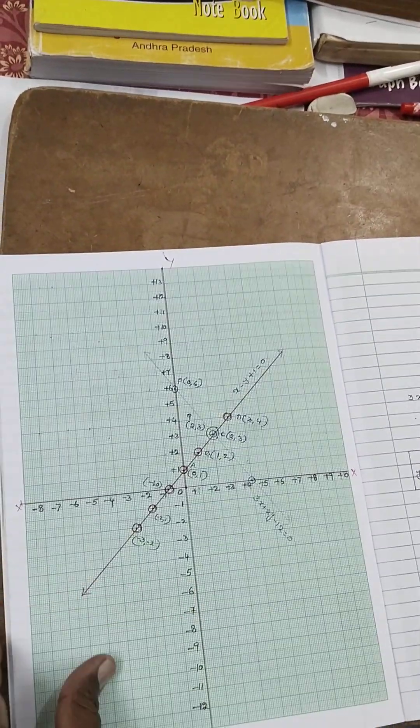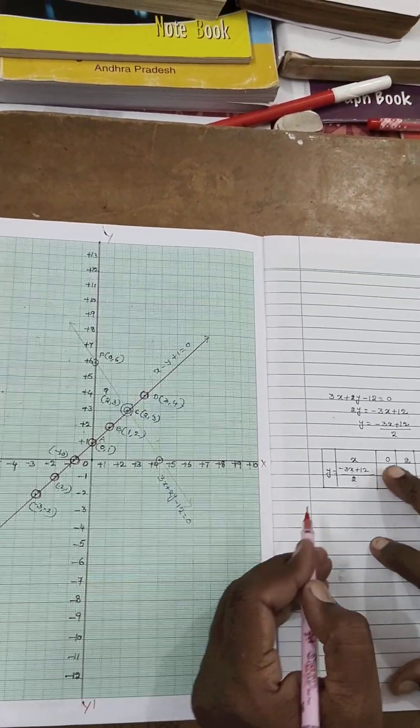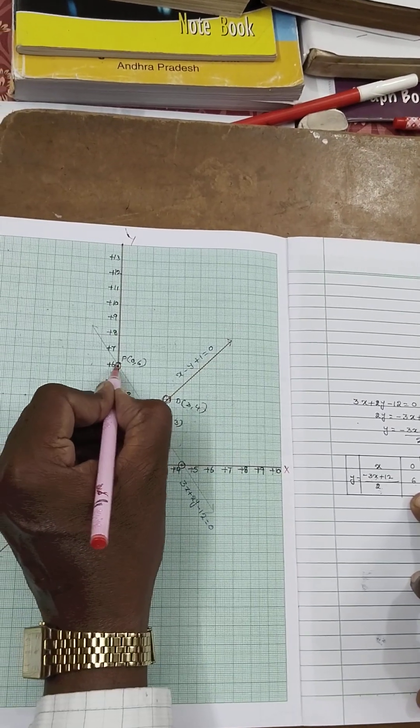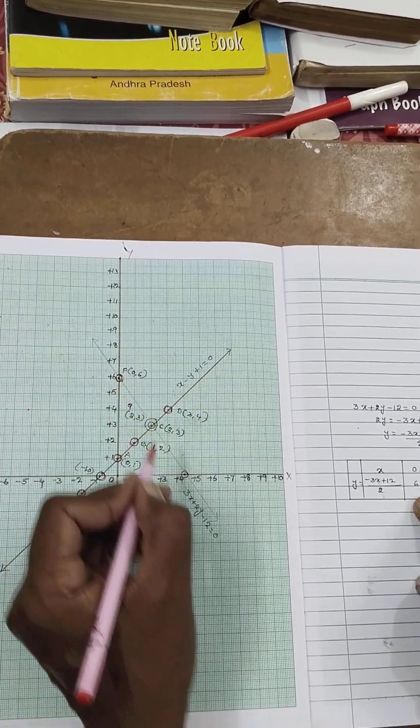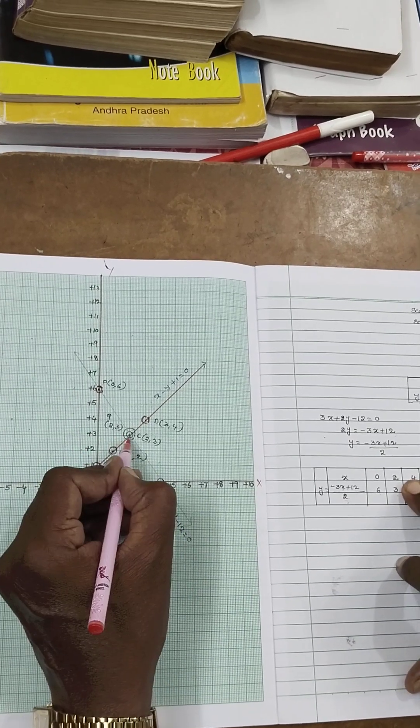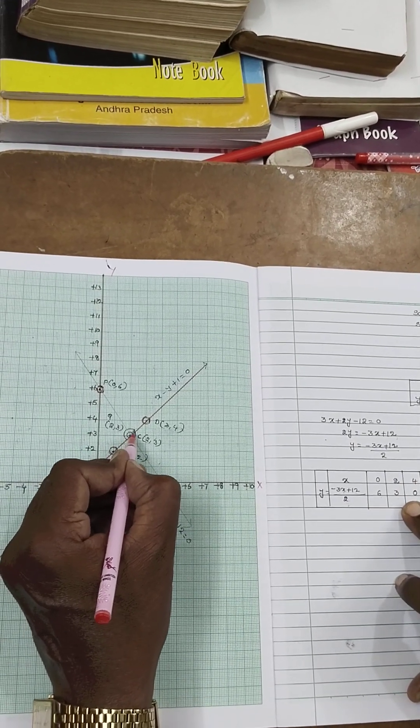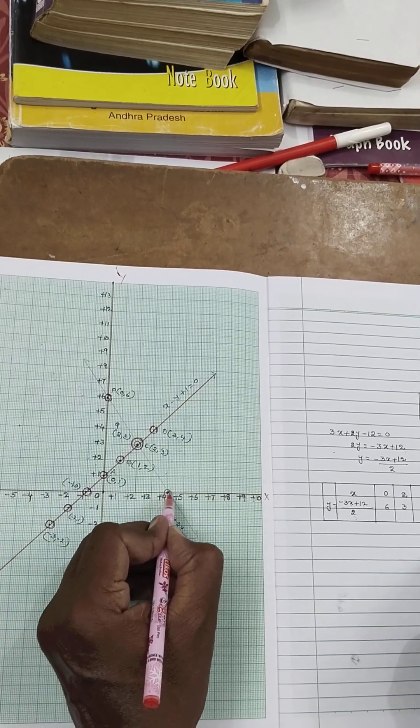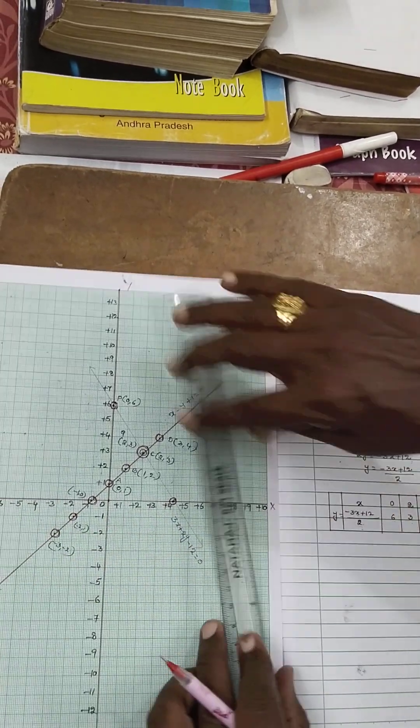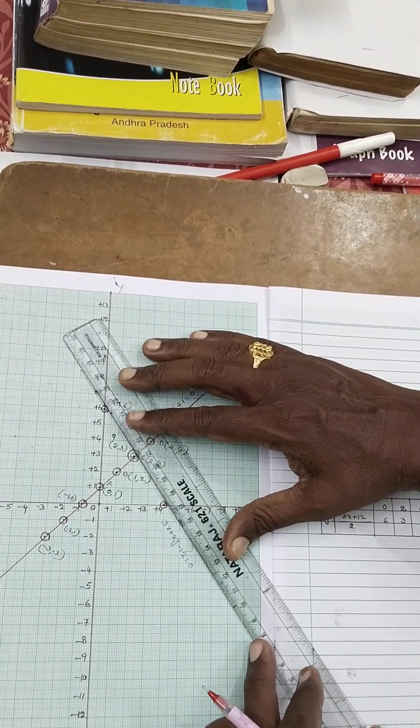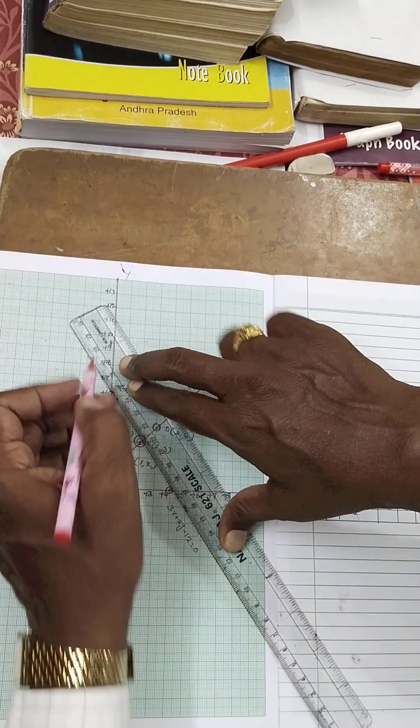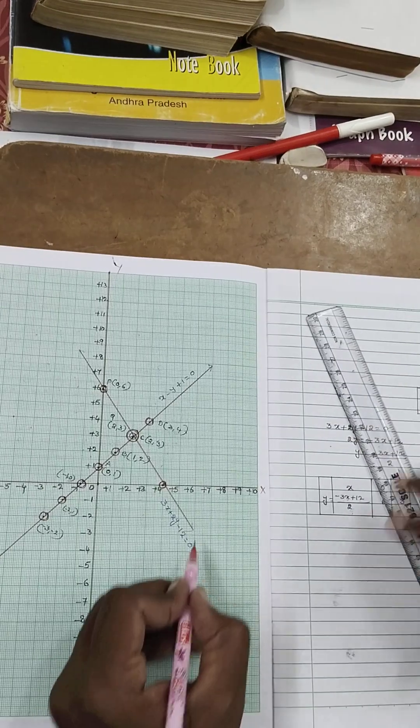Like this. And again, next table. 0, 6. 0 and 6. 0 comma 6. 2, 3. Again next, this one. And again, 4, 0. 4, 0. Draw the line. Like this.